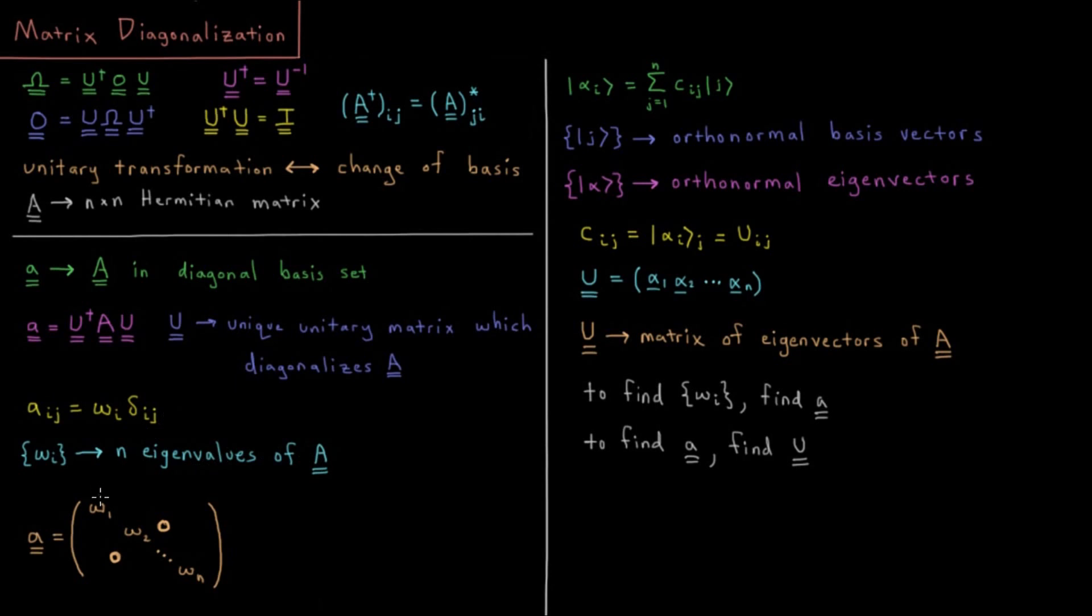So if you can find this unitary matrix which diagonalizes our Hermitian matrix A, then the diagonal elements are all of the eigenvalues. So if you can diagonalize a matrix you have all of the eigenvalues.